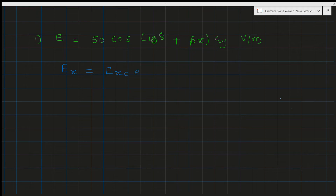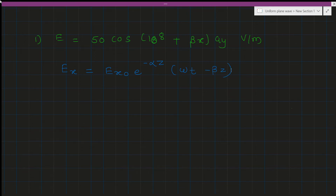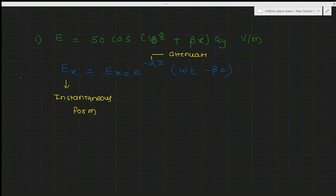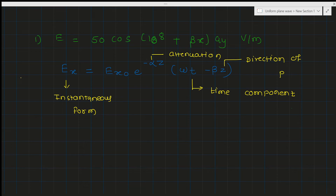The wave representation is Ex = Ex0 · e^(−αz) · cos(ωt − βz). Here, Ex is the instantaneous form of the wave, alpha is the attenuation constant, t represents the time component, and the direction of propagation is indicated by the sign of beta z. Since it is minus beta z, the wave travels in the positive z direction.